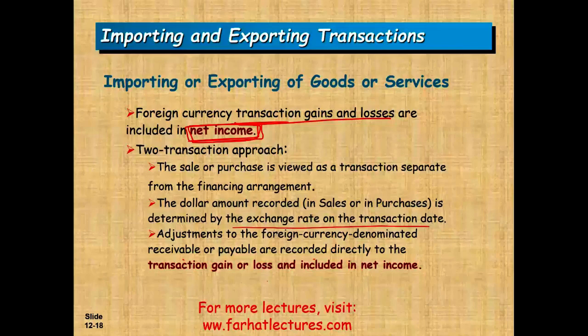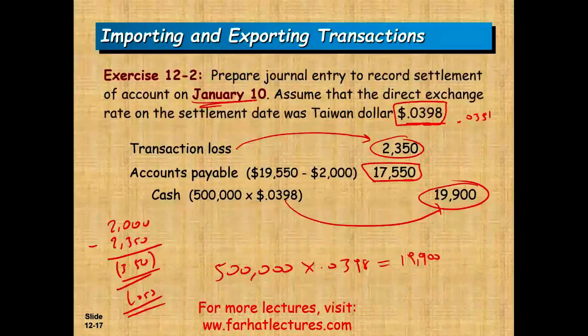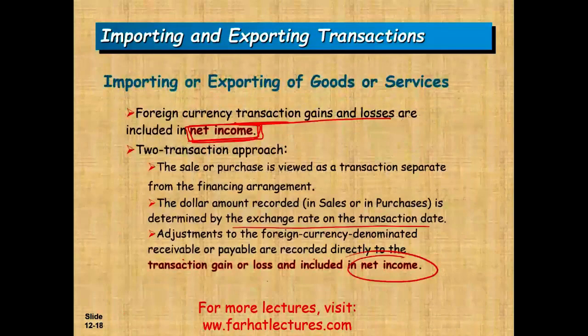Any foreign currency transaction gains or losses are included in net income — not on the balance sheet under other comprehensive income. The sale or purchase is viewed as a transaction separate from the financing arrangement. The dollar amount recorded in sales or purchases is determined by the exchange rate on the transaction date, and adjustments to the foreign currency denominated receivable or payable are recorded directly as transaction gain or loss in net income.